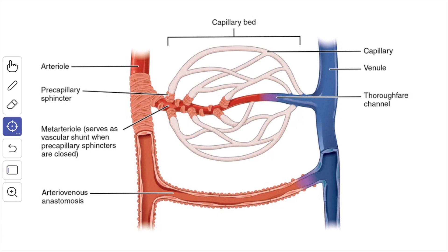When traced distally, the muscular artery progressively decreases in calibre till they have a diameter of about 100 micrometers, and they then become continuous with arterioles. The larger or muscular arterioles are 100 to 50 micrometers in diameter. The arterioles less than 50 micrometers in diameter are called terminal arterioles.